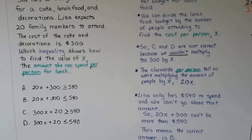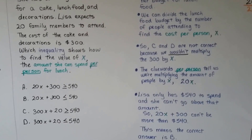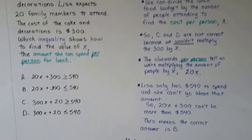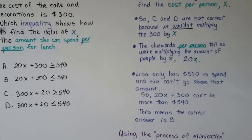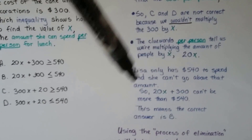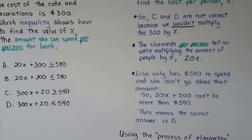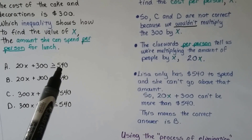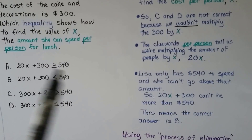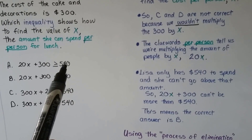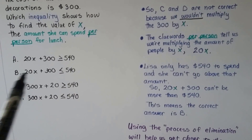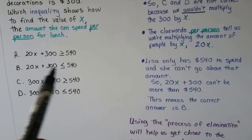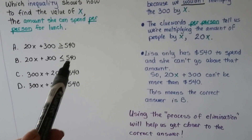The clue words 'per person' tell us we're multiplying the number of people by X, so we know it's A or B — it's going to be 20X. Now she only has $540 to spend and she can't go above that amount — that's all she's got. If you look at A, it says greater than or equal to $540. Well, she's only got $540, so it can't be greater. So it's got to be B — she can spend less than or equal to $540.